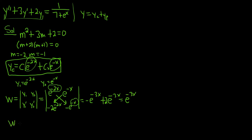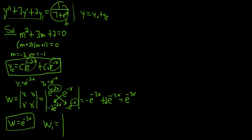I'm going to put that in a box — we have our W, which is e to the negative 3x. Now W1 is very similar: it's the same Wronskian except you delete the first column and replace it with 0 and f of x. So you put 0 and then 1 over 7 plus e to the x. The second column stays the same: e to the negative x and negative e to the negative x.